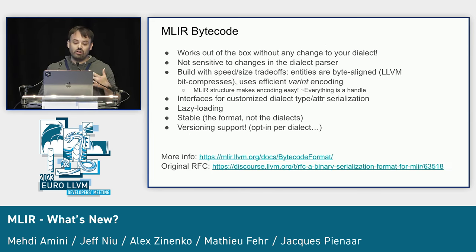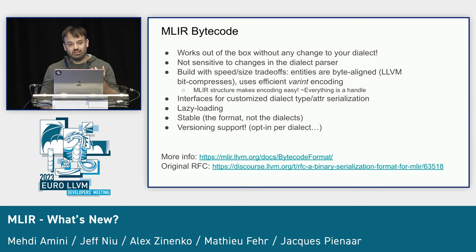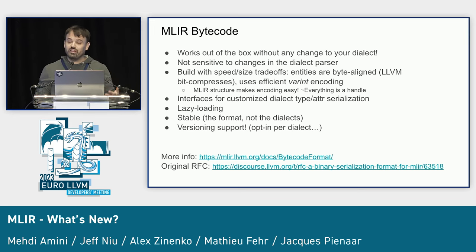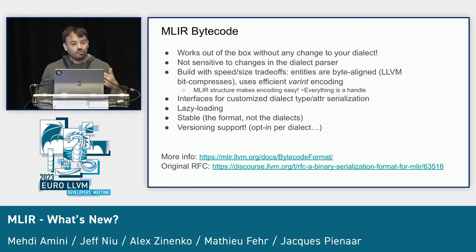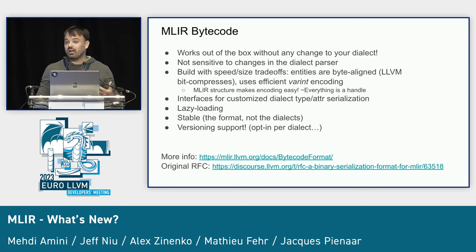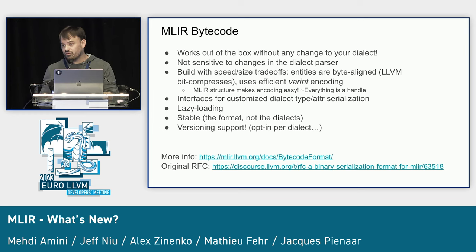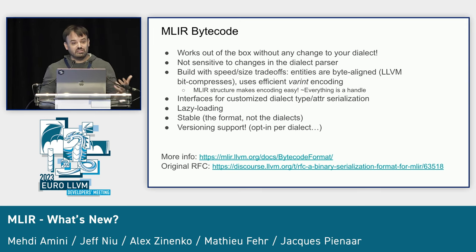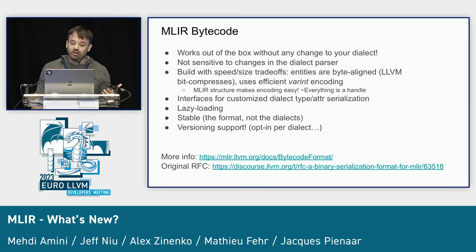MLIR bytecode works out of the box with your dialect, relying on the fundamental concepts in MLIR to represent your dialects without any additional work. One consequence is it is not sensitive to changes in your operation assembly syntax — changes to a dialect's parser don't affect it. It's designed with specific speed-size trade-offs: entities are byte-aligned, which compared to LLVM's bitcode means using bytes to make loading easier and faster, using an efficient varint encoding.